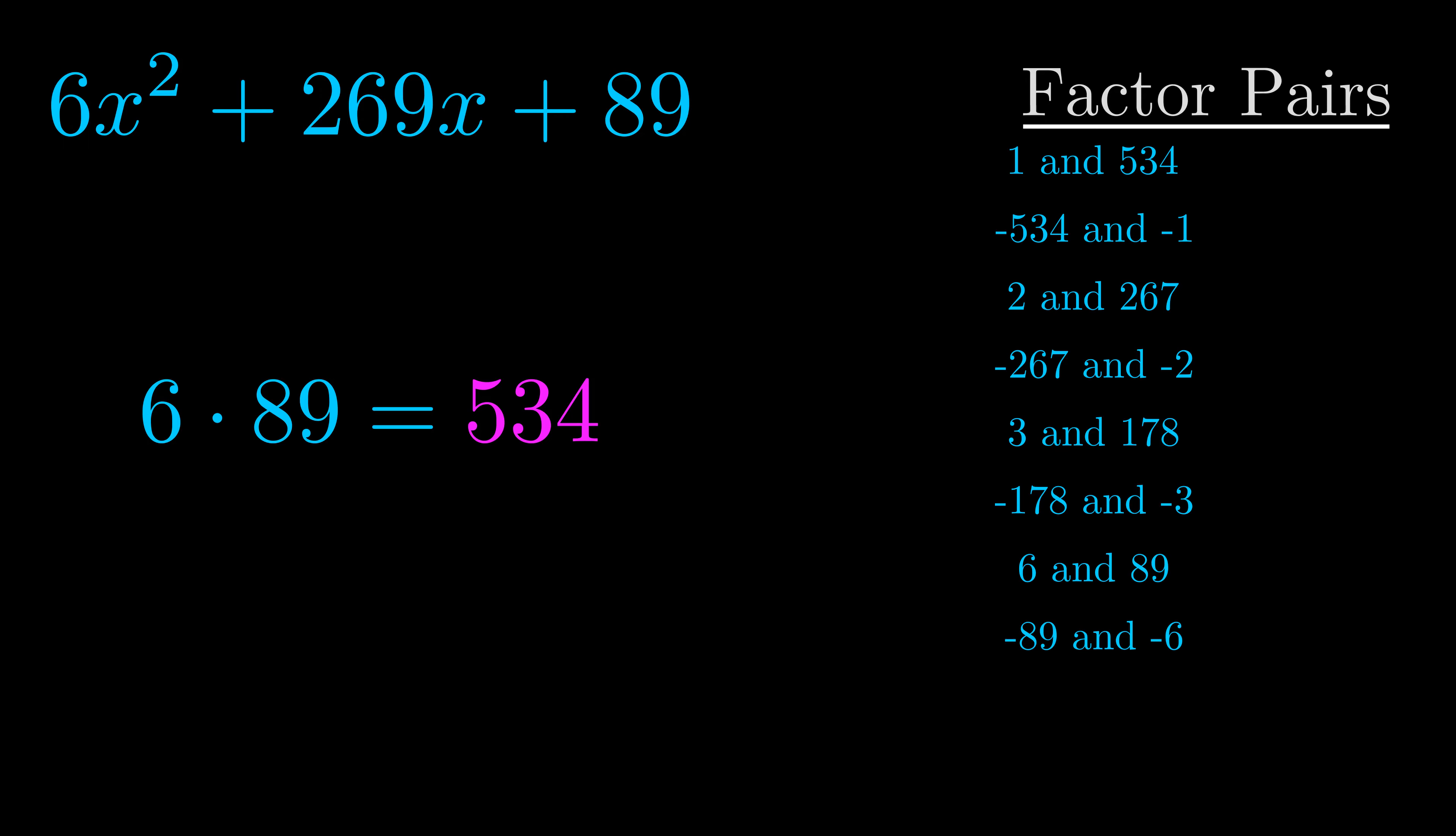The b value is the coefficient on the x term. That's the middle term, the one that we haven't done anything with yet. And really this is the only factor pair that we need.